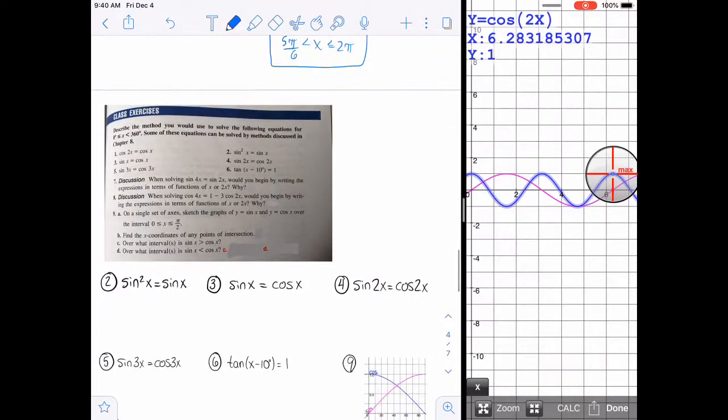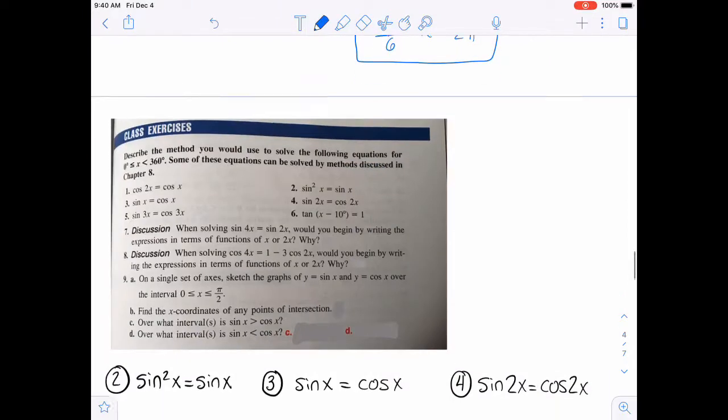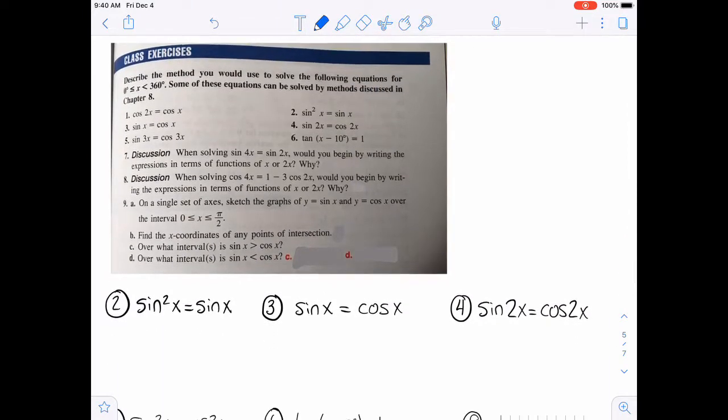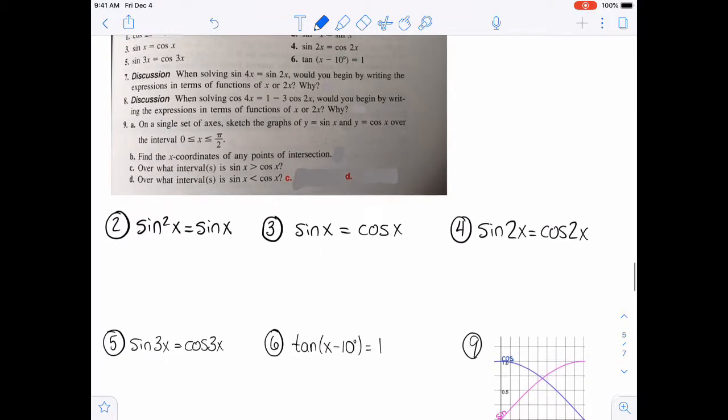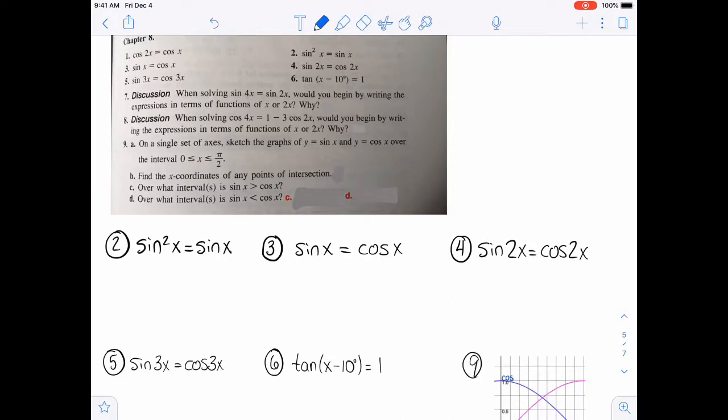All right, let's look at some guided practice here. This first section says, describe the method you would use to solve the following equations. Some of these can be solved by methods discussed in chapter 8. And number 1 is the one that we just did. So we're going to start with number 2. And that one, you can actually just solve by subtracting the sine x to the left and then factoring out a sine. So it would kind of look like this. You'd have a 0 left. And then you could factor that. And that's not really from this chapter, necessarily.